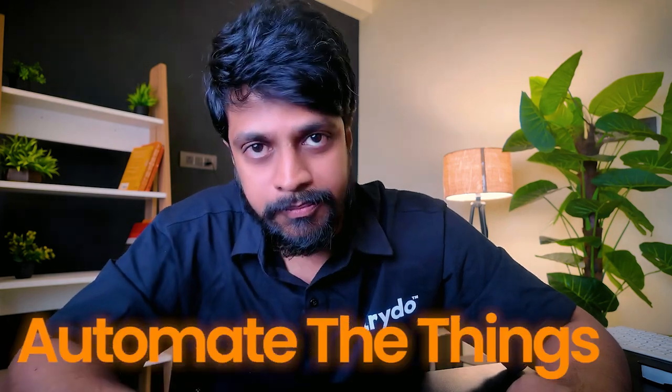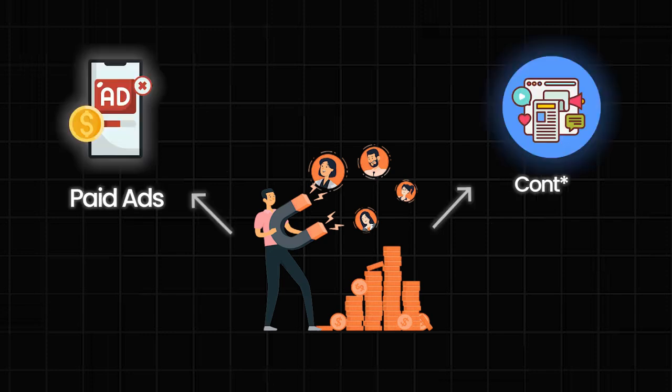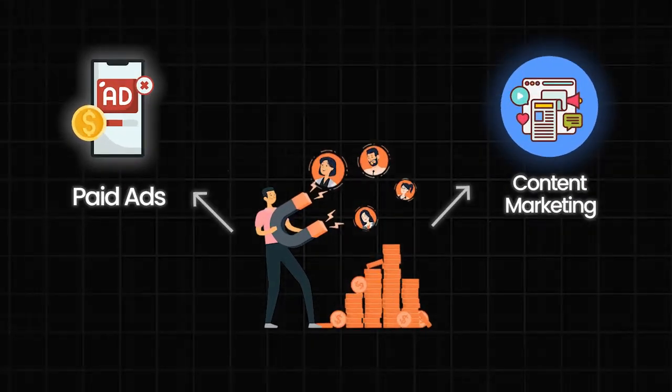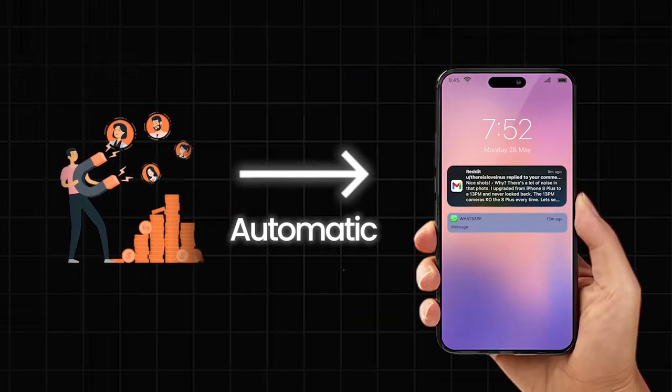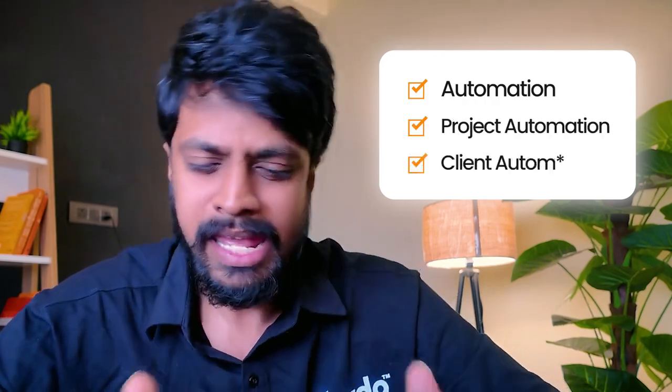As a freelancer it is very important to automate things. For example, if you generate a lead through paid ads or content marketing, it needs to be stored automatically in the CRM, and once you generate a lead an automatic email and automatic WhatsApp message should be sent to the client — something like 'Hey, thanks for your lead, my team will get back to you within 24 hours.'